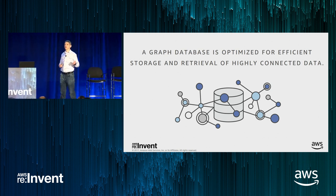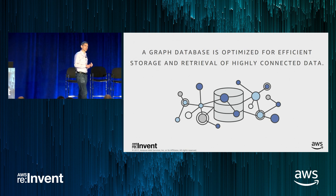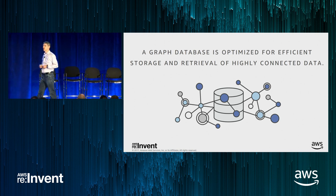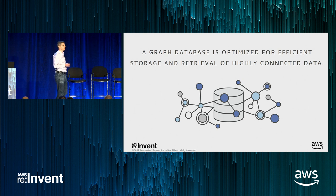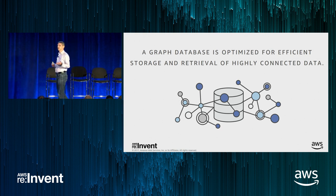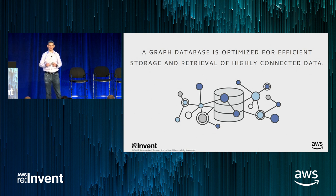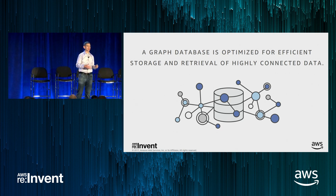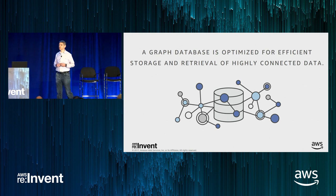A graph database is a database optimized for graph applications — the way we store data and relationships is optimized, and the graph query languages are built to be very natural for graph use cases. They're very fluid and flexible, so you don't have to force a schema. For example, if Facebook starts with just a 'likes' relationship and later adds more emoji reactions, with a graph database you could just add that feature without redoing the schema or altering a table.